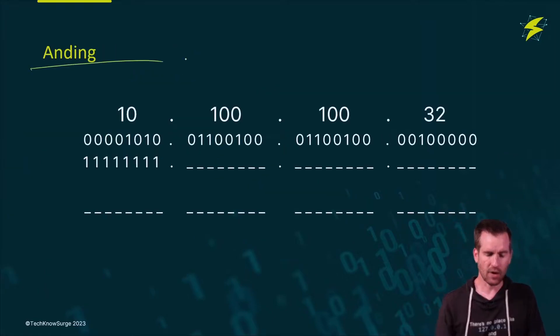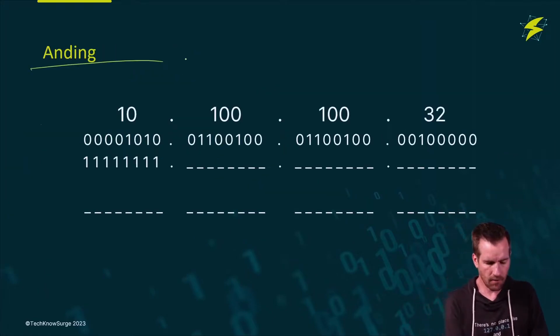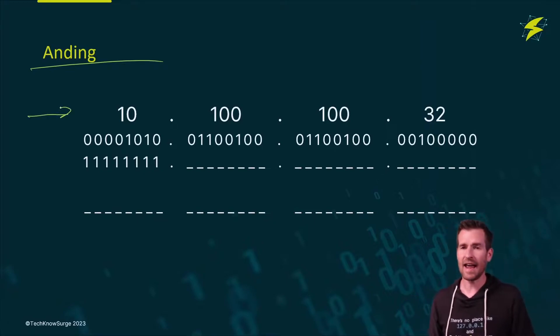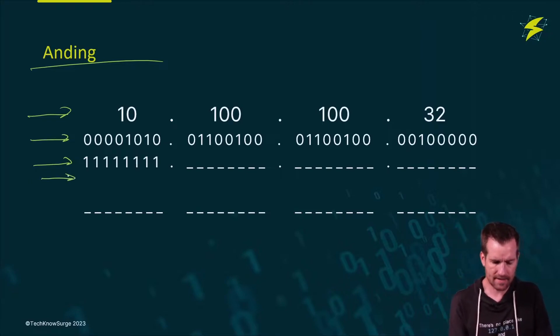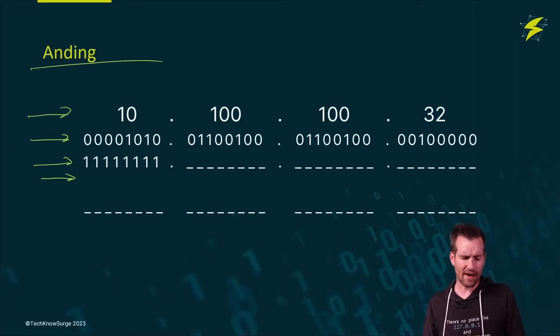Let's take a look at this anding process. In this scenario, I have an IP address written out in binary. I have the mask in binary. We can even write out the mask in decimal. First of all, we have to come up with a scenario. Let's just say we're going to borrow 11 bits, so that would be a slash 19.